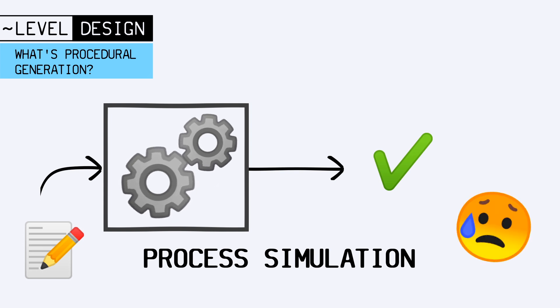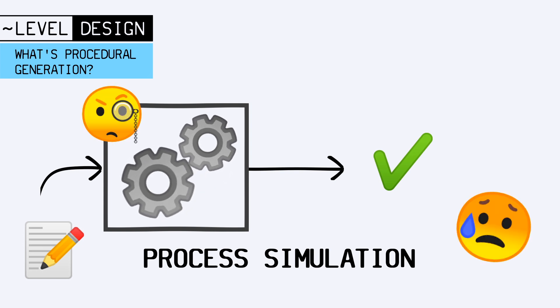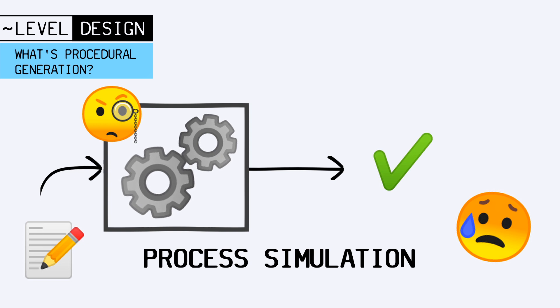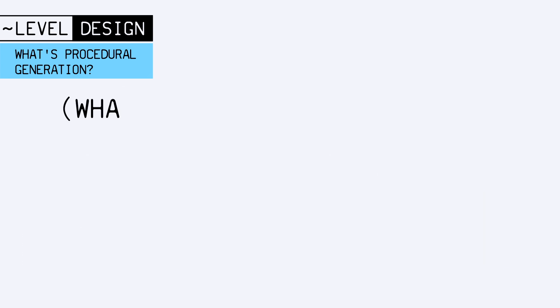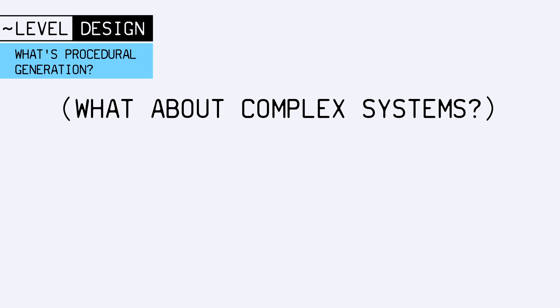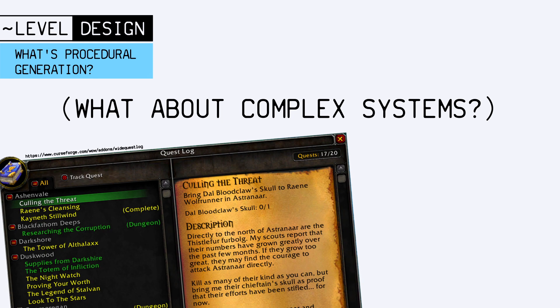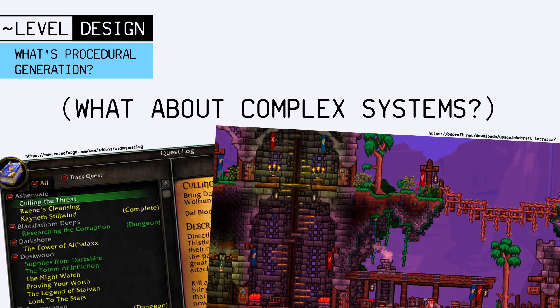This can be difficult, because it means you have to have a really good grasp on the specific stage of the creation pipeline that you want to make procedural. And for intricate and large systems like a questline or an entire level, it requires a real knowledge of the matter at hand.